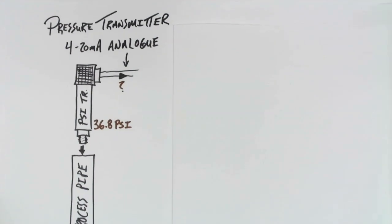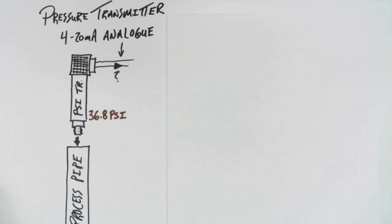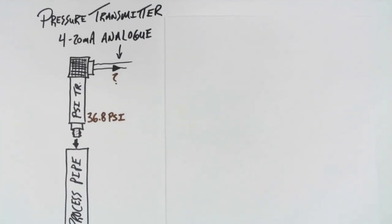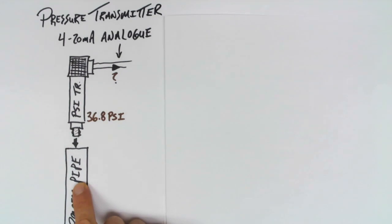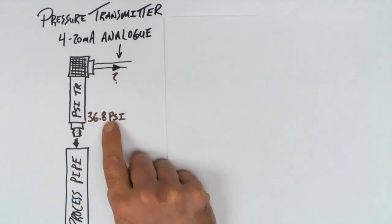Let's take a look at an example. The example we're going to look at is a pressure transmitter which is going to be operating on the 4 to 20 milliamp analog signal. The pressure transmitter is connected into a process pipe of some sort, and that process pipe is at an actual real-time pressure of 36.8 PSI.